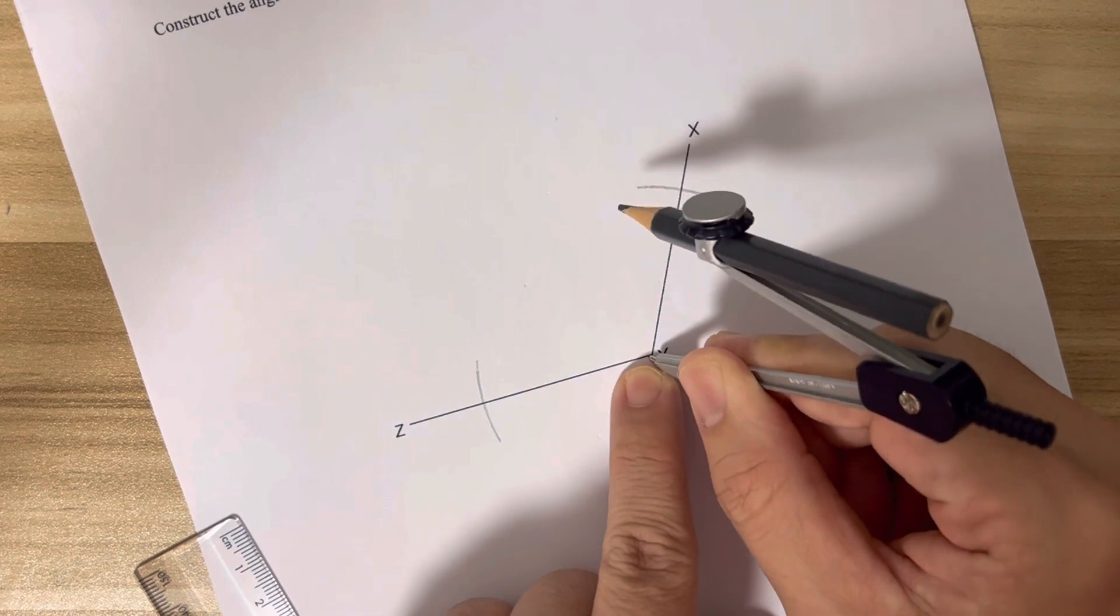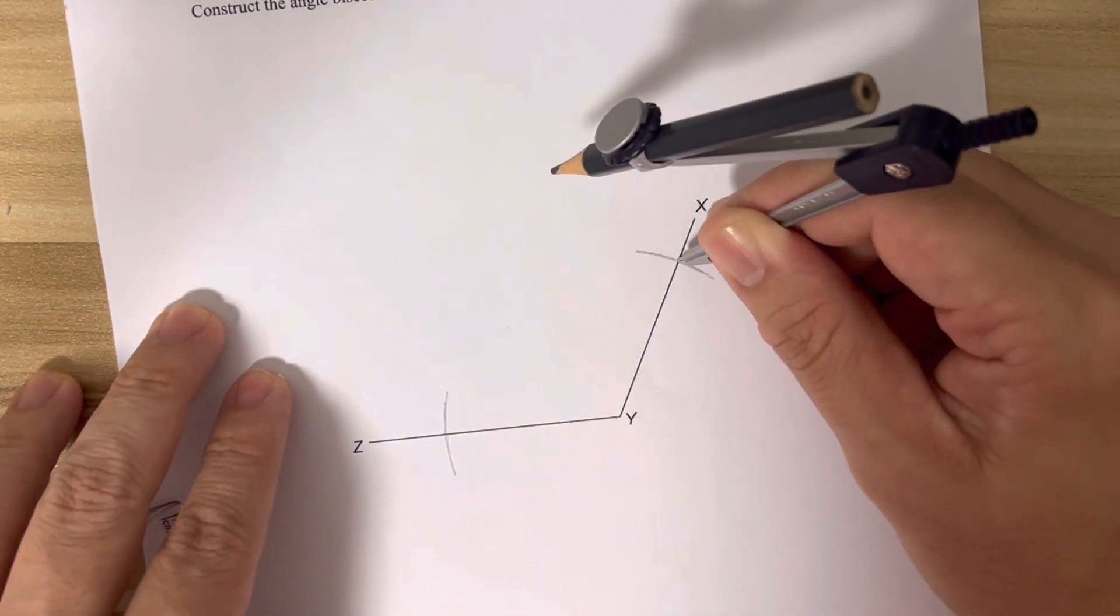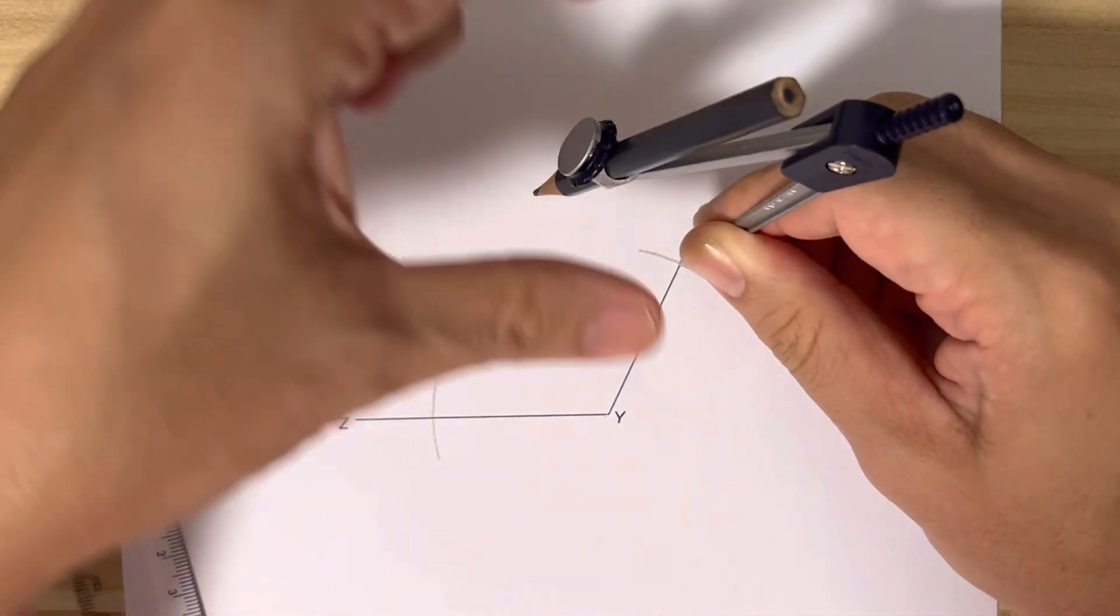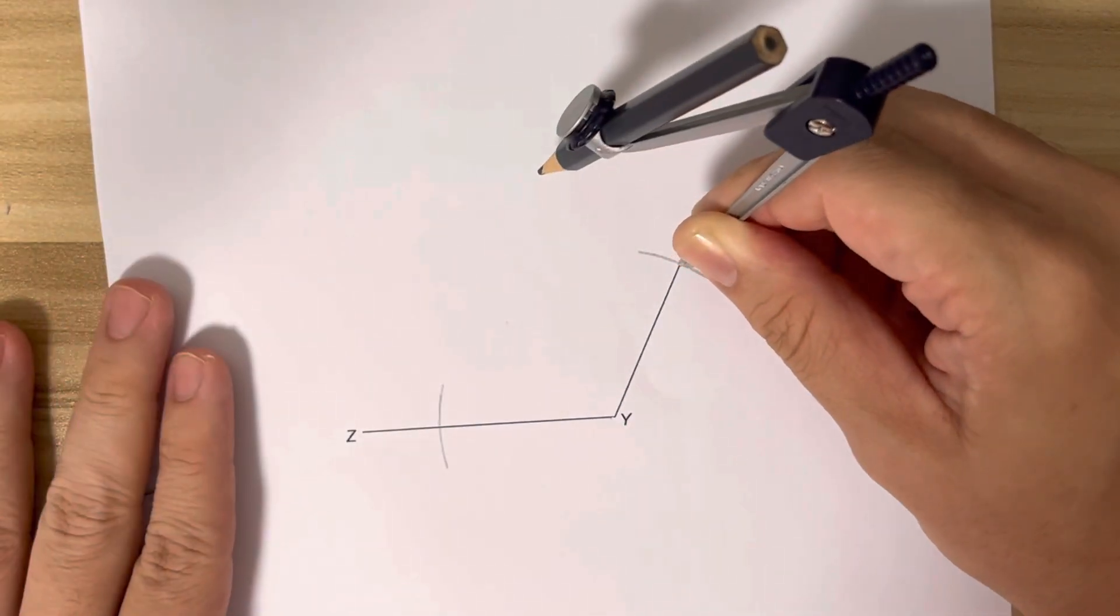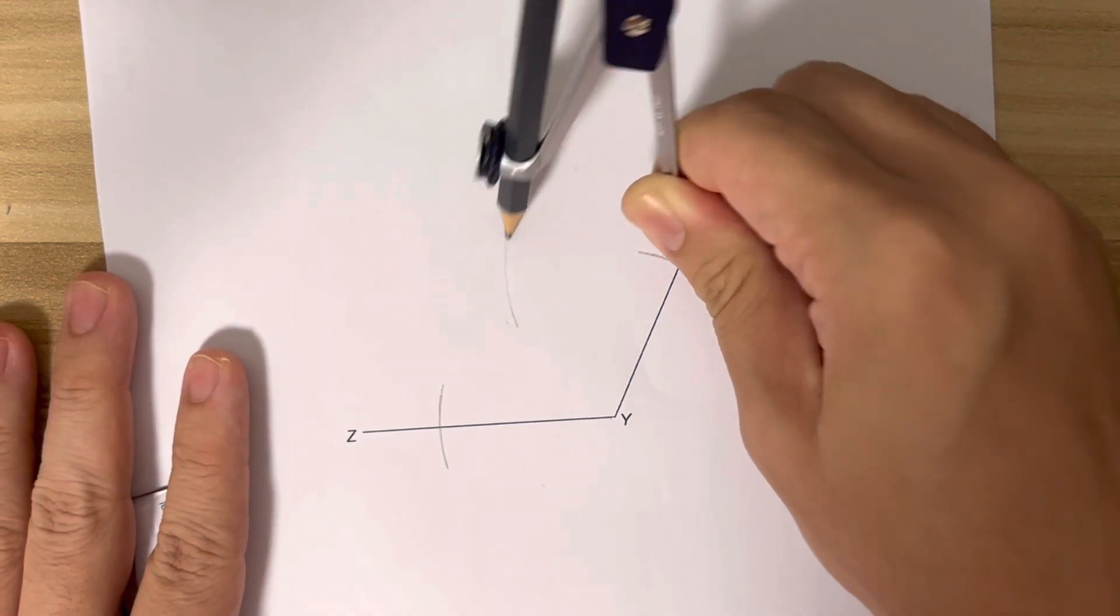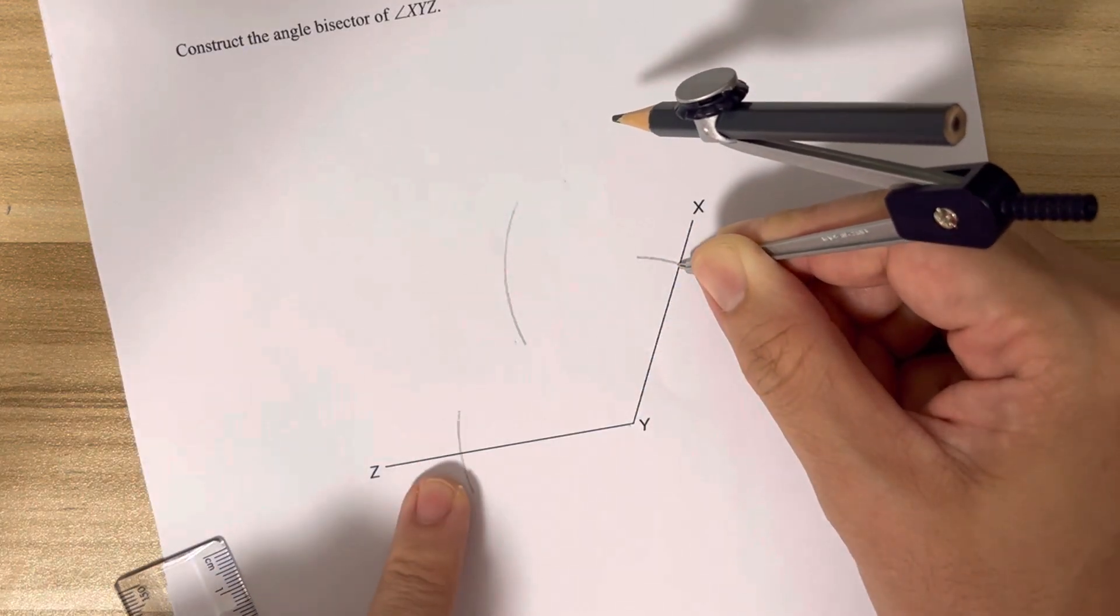Now we move the pointed tip to one of the points. And at this point you can actually shift this distance of the pencil, but usually we don't. Move the pointed tip to the other point.